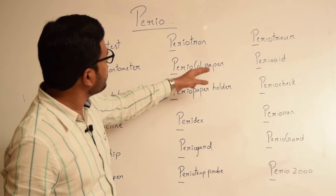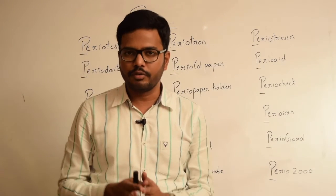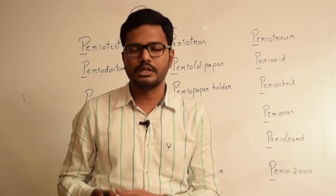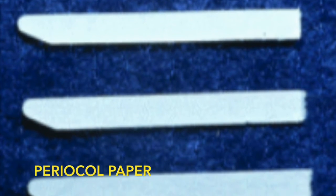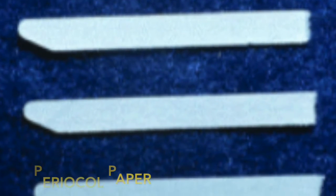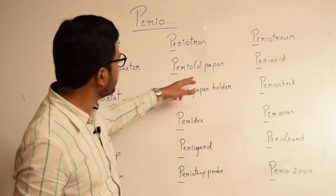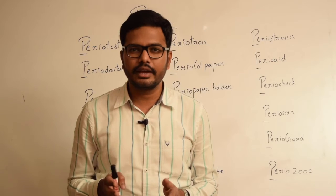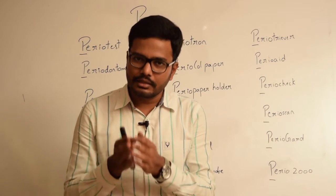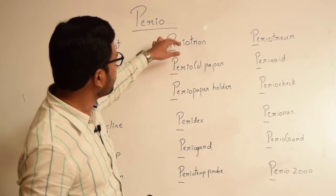Then we have periocall paper. In order to collect larger volumes of fluid in the range of 0 to 2 microlitres, periocall paper is used. And then we have periopaper holder, which, as the name indicates, holds periopaper. This holder can be mounted on all periotron models.